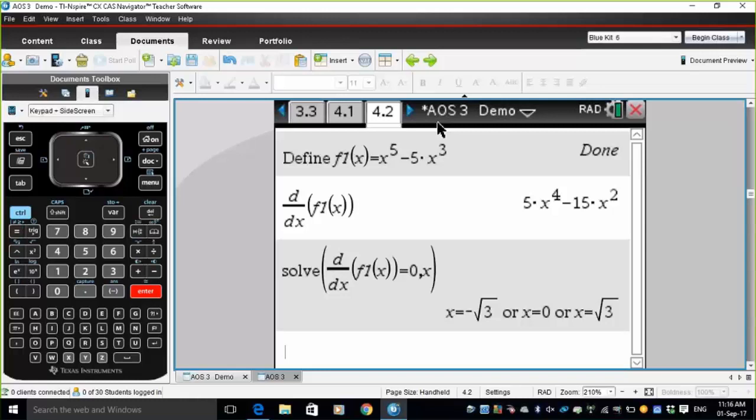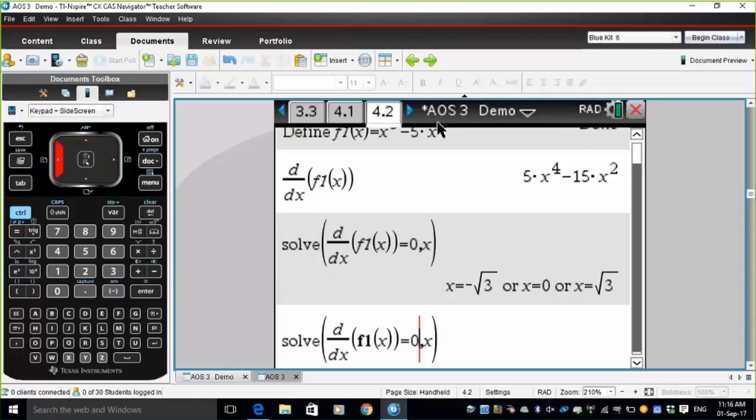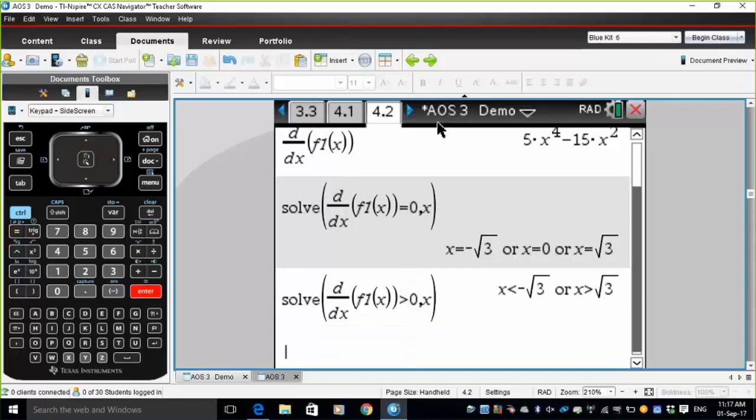But we can actually find where the gradient is positive. Let me just press up arrow here and reissue that command. But rather than solving an equation where it's equal to zero, we can solve an inequality. So let me just type in a greater than there and that will then find where the gradient is positive.